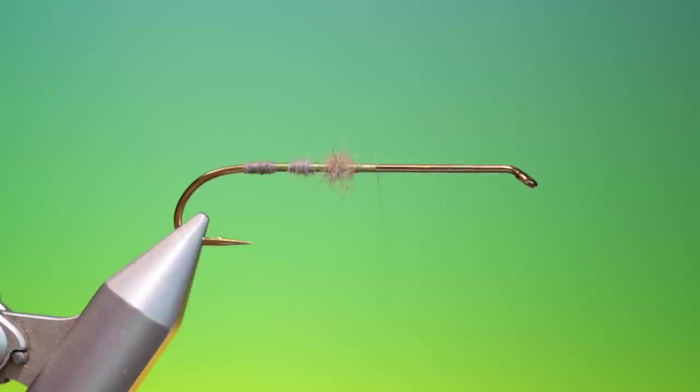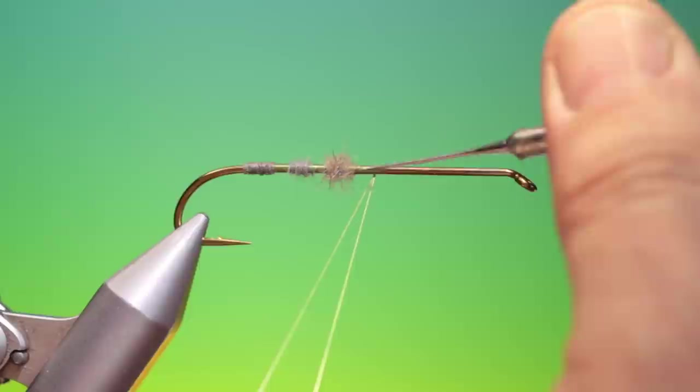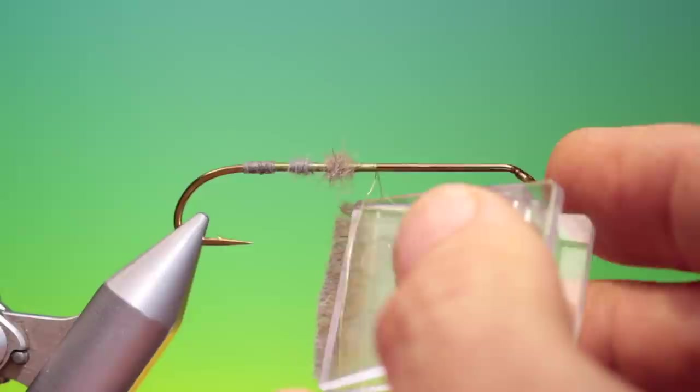Now I want to split my tying thread so I'll spin it anti-clockwise to flatten it out. Now we'll split that right up to the hook shank. Now what I've done is I've taken a little piece of under fur with a few guard hairs in here. In a petitjean clip.